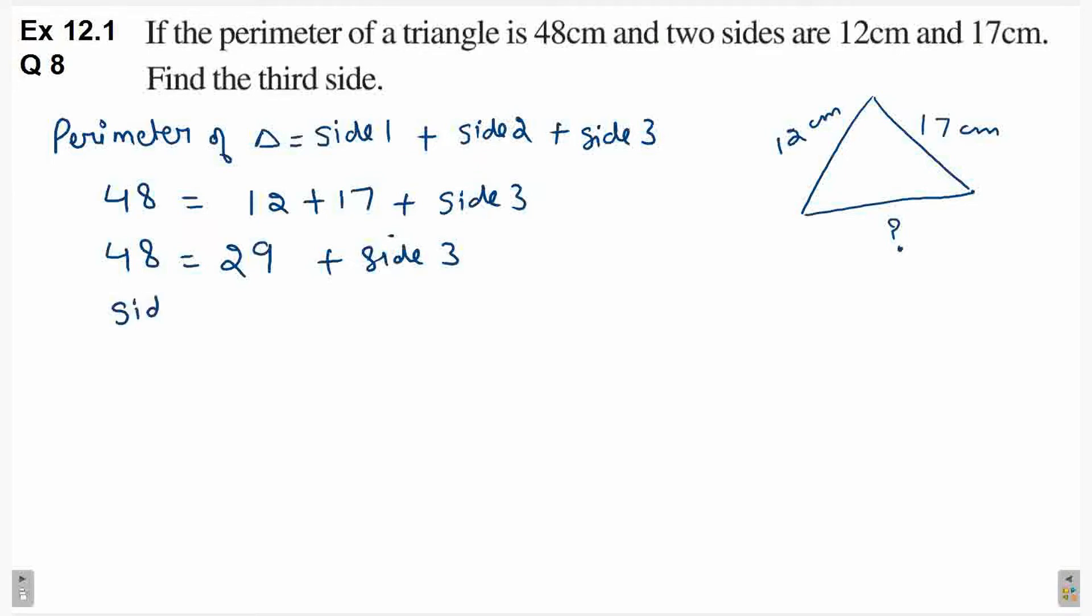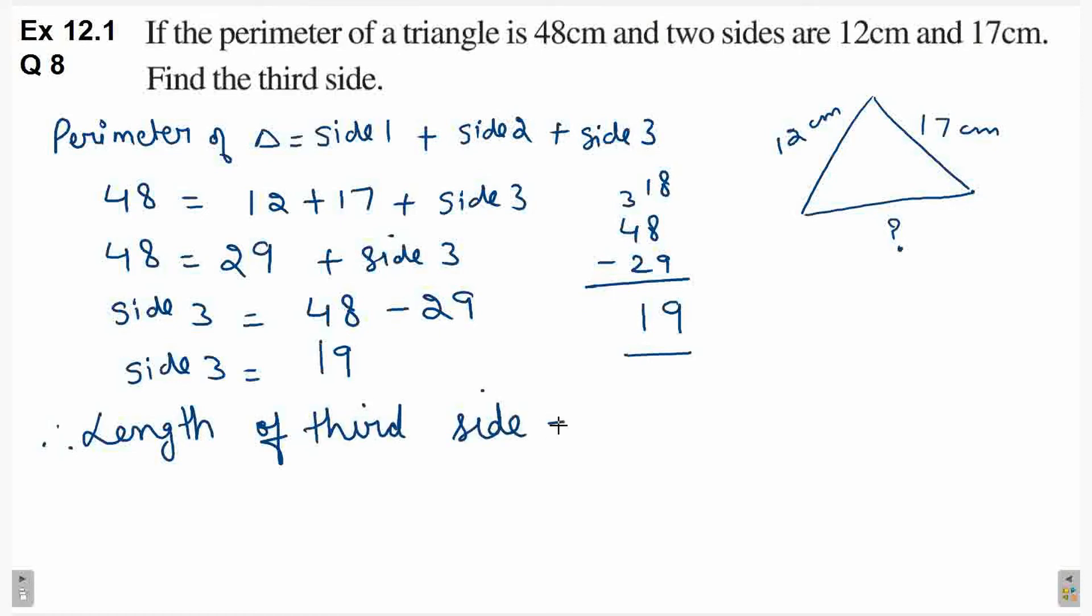So side 3 will be 48 minus 29. So side 3 is equal to, 48 minus 29, here it becomes 18, 18 minus 9 is 9, now here 3 remains, 3 minus 2 is 1, so 19. Therefore, length of third side is equal to 19 cm.